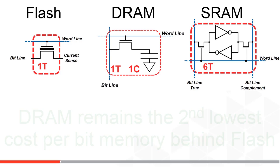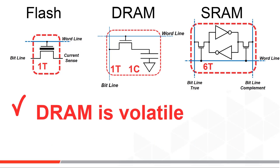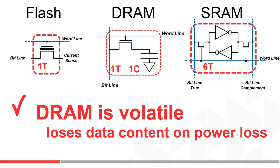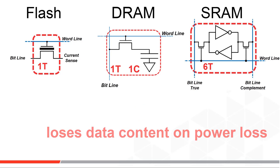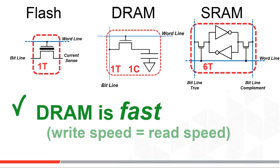And unlike flash but like SRAM, it's volatile, which means it loses its data content on a power loss to the IC. But also unlike flash but again like SRAM, it is very fast and has symmetrical read and write speeds.